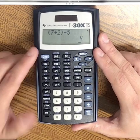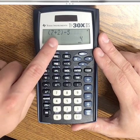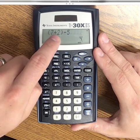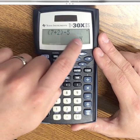And that again is showing the order of operations that we do parenthesis first. 7 plus 2 makes 9, and then 9 minus 5 makes 4.